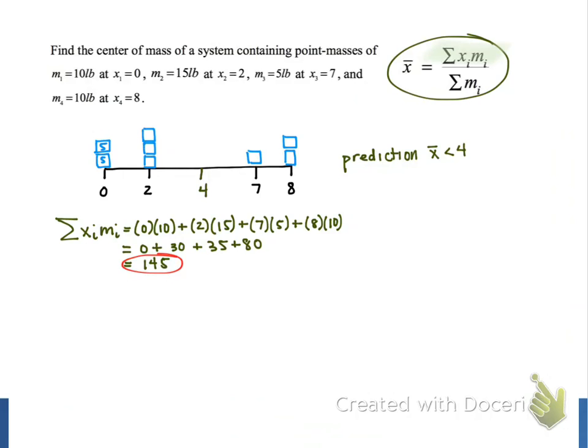Next, we'll evaluate the sum in the denominator of the formula. This sum is easier because it's just adding the weights of the 4 point masses. The result is 10 plus 15 plus 5 plus 10, which simplifies to 40.